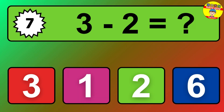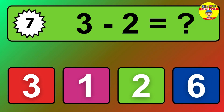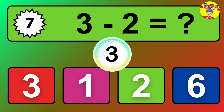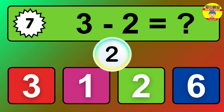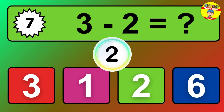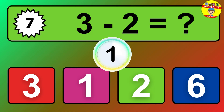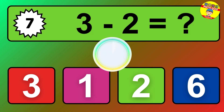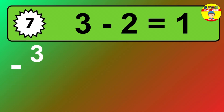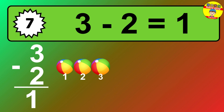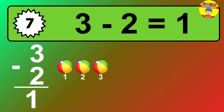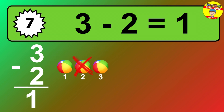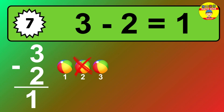Question seven: three minus two equals what? So the answer is three minus two is one. Let's count it.